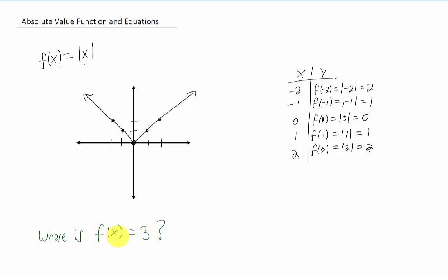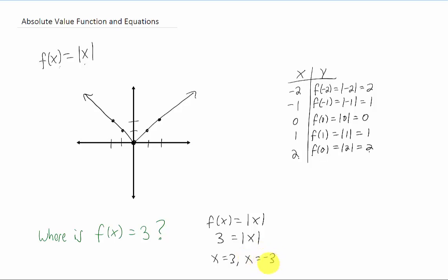We can ask the question: where is our function equal to three? Let's take a look at it algebraically. If we set our function value equal to three, we get the absolute value of X equals three. Most people would point out that X equals three is one answer right away — the absolute value of three equals three, which is true. But there's one more: if we plug in X equals negative three, the absolute value of negative three equals three, which is also true. So the function equals three at two X values: three and negative three.